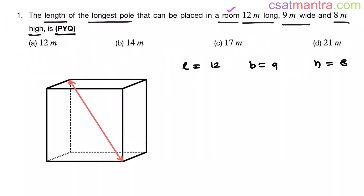A room is a cuboid. Length, width, and height are given. Length is 12 meters, width or breadth is 9 meters, and height is 8 meters. Now we want the longest pole — that would be the body diagonal, from this corner to the topmost corner.